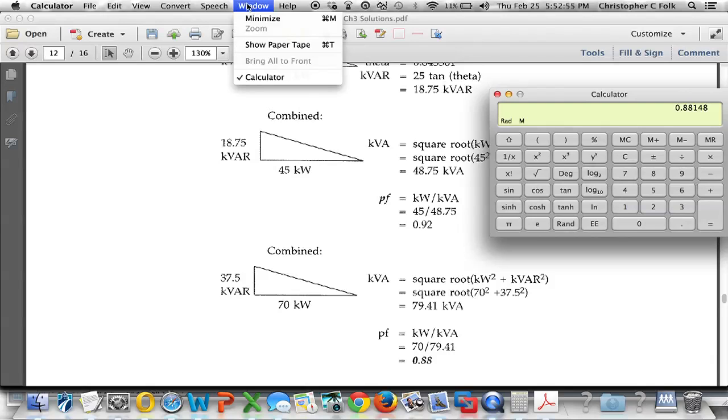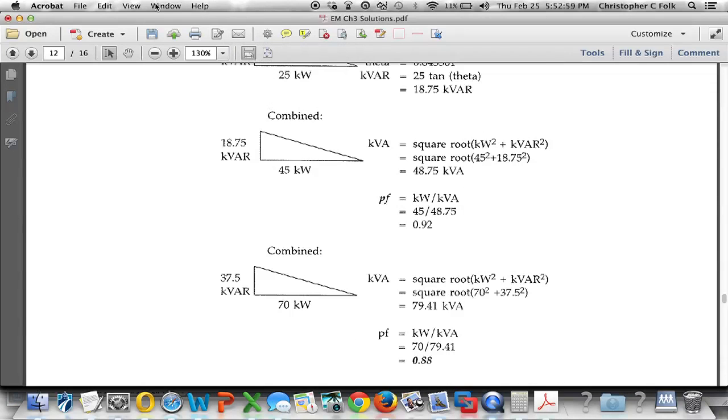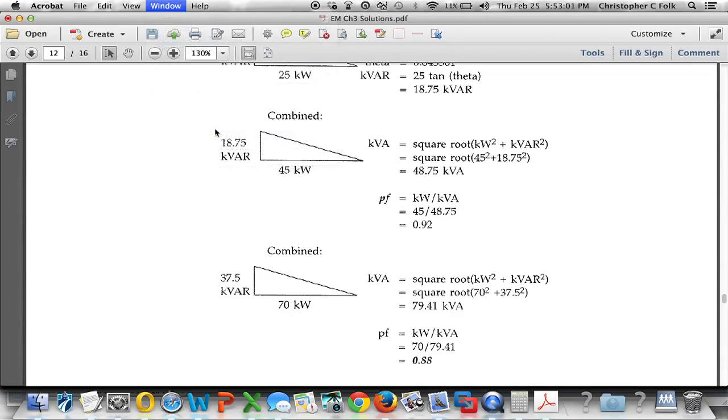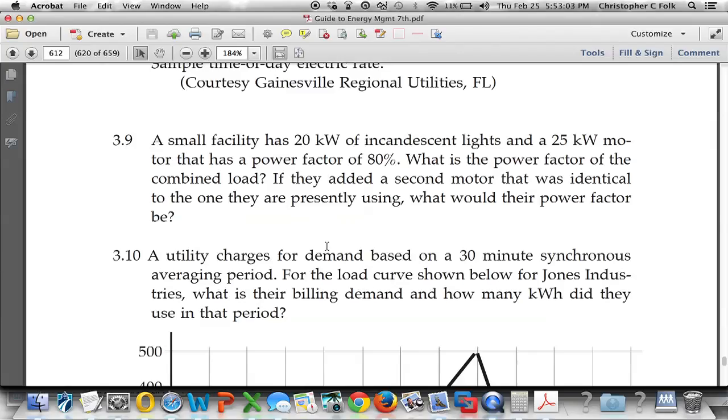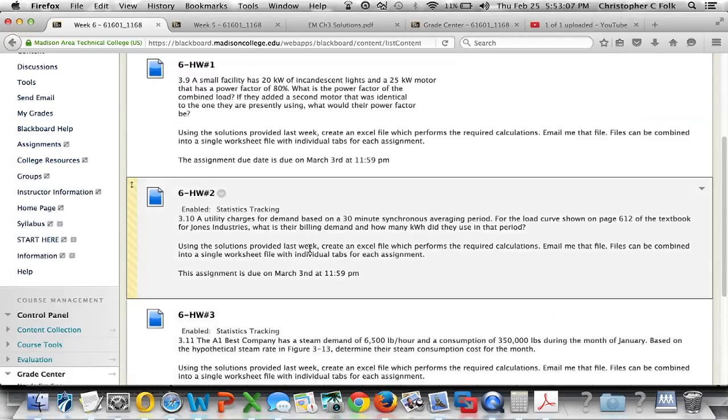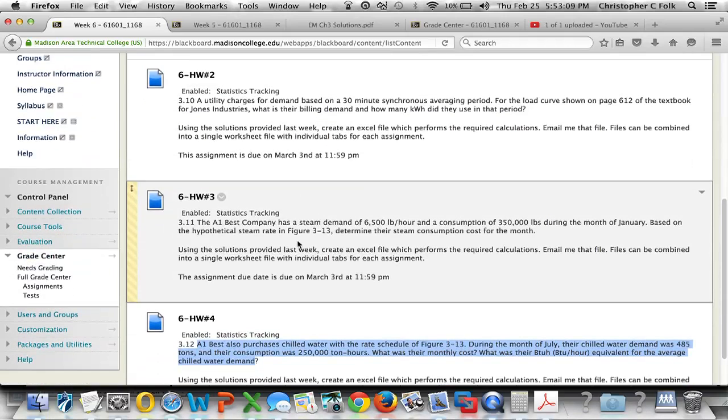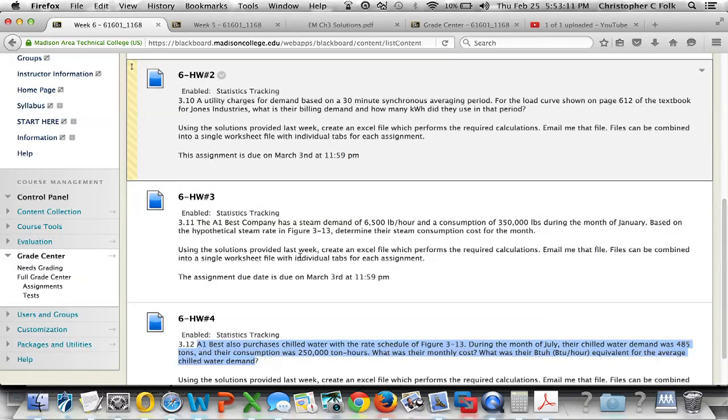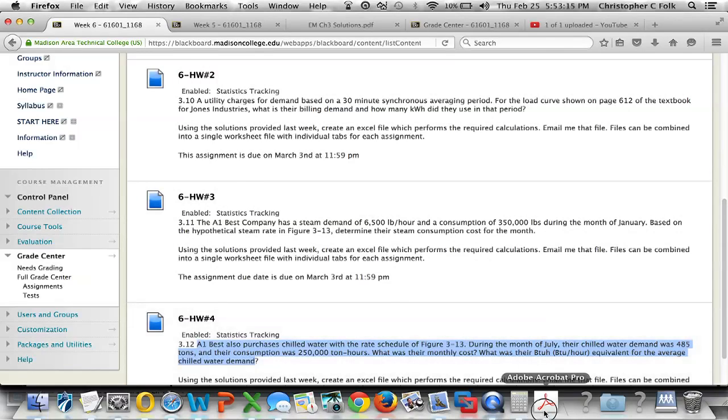Our next problem is 3-10. Again, we'll look at the blackboard. Blackboard says homework week six, homework number two is to do item number three, problem number 3.10. Problem number 3.10 is this.